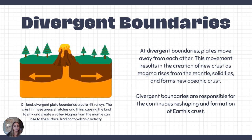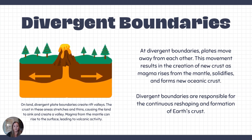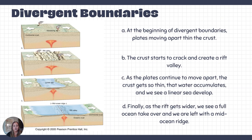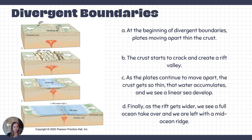Divergent plate boundaries don't always begin underneath the ocean. At the beginning, two plates start to drift apart, or a single plate splits because two convective cells below pull it apart. If this occurs on a continent, you start to see thinning of the crust — it's like pulling a Laffy Taffy apart, where the middle gets thinner and thinner.